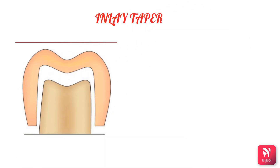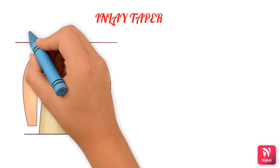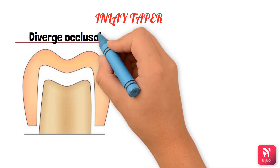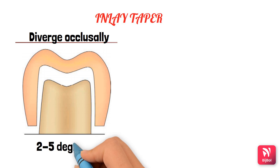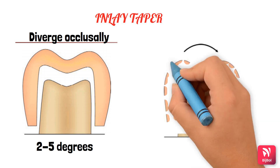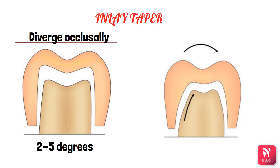The concept of inlay taper means that the cavity walls should slightly diverge occlusally from the pulpal floor, as the restoration is fabricated by an indirect method. This helps in easy removal of the wax pattern and proper seating of the inlay. Ideally, opposing walls should be parallel to provide good retention, but this is practically not possible. Therefore, 2 to 5 degrees of taper per wall is accepted, and this taper can be increased when the length of the wall or surface involvement increases.